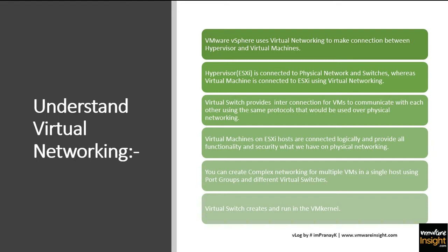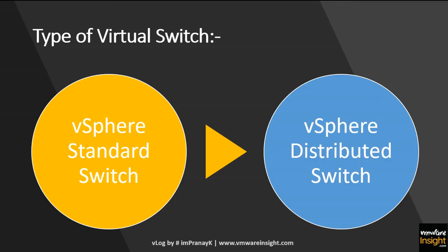There are two types of virtual switches: vSphere Standard Switch and vSphere Distributed Switch. With the standard switch, you create it on each individual ESXi host. With the distributed switch, you create it at the vCenter level and then map all your ESXi hosts to that single distributed switch. With the standard switch, you have to create it separately on every ESXi host you have.